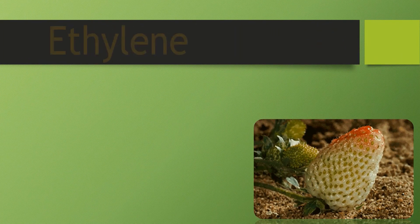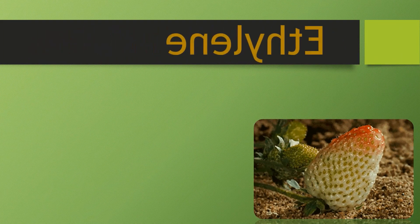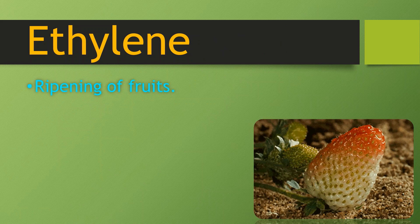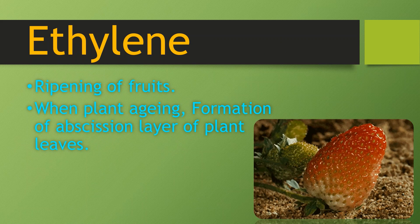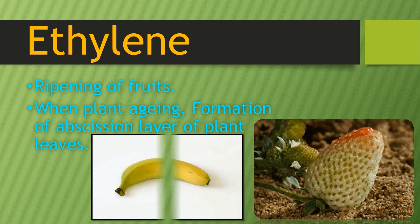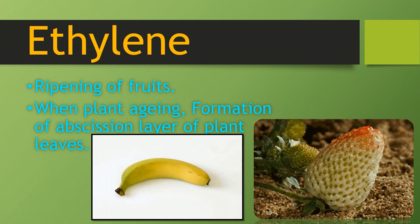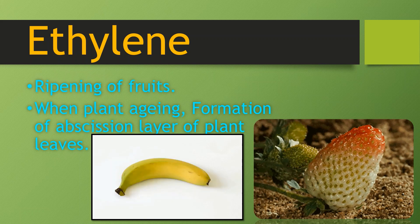Then about ethylene. Ethylene is responsible for the ripening of fruits, plant aging, and the formation of the abscission layer of plant leaves.